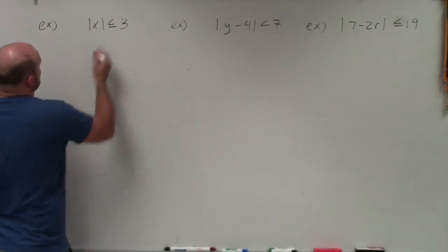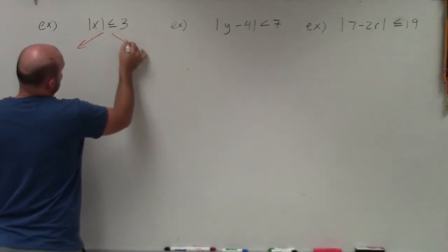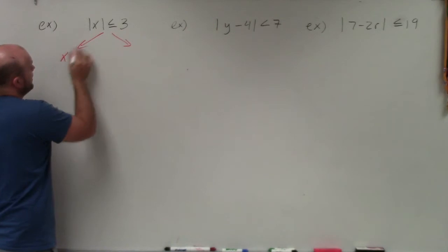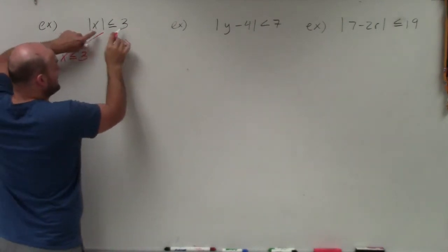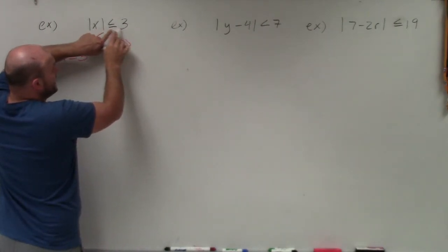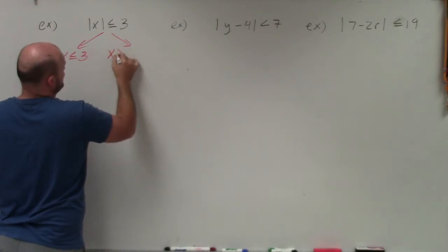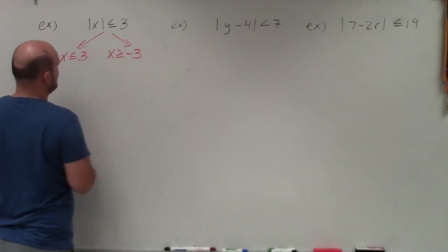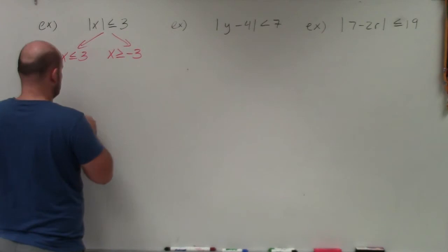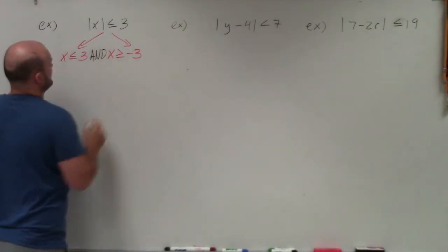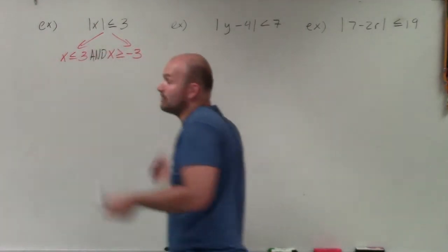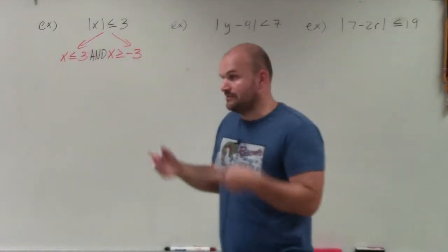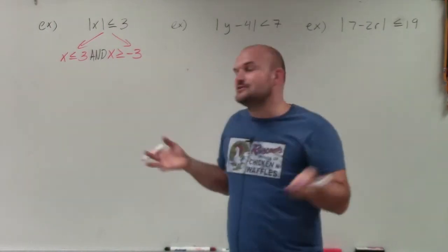So the first thing you want to do is create our two cases. We have the absolute value of x is less than or equal to 3. Then remember, negating — since we're going to negate this 3, we have to make sure we flip the sign. So x is now going to be greater than or equal to negative 3. The conjunction here is going to be 'and.' x has to be less than 3 but x has to be greater than or equal to negative 3 — it's going to be in between there.